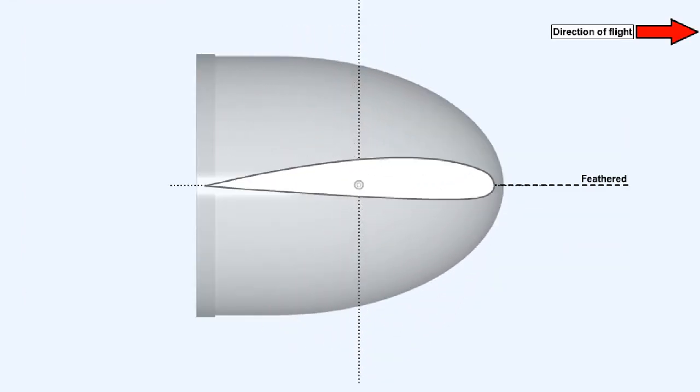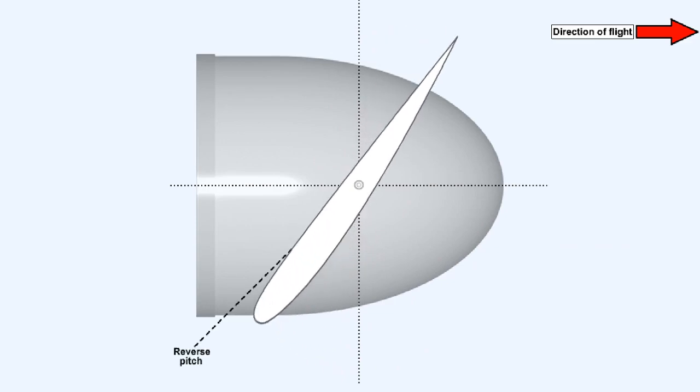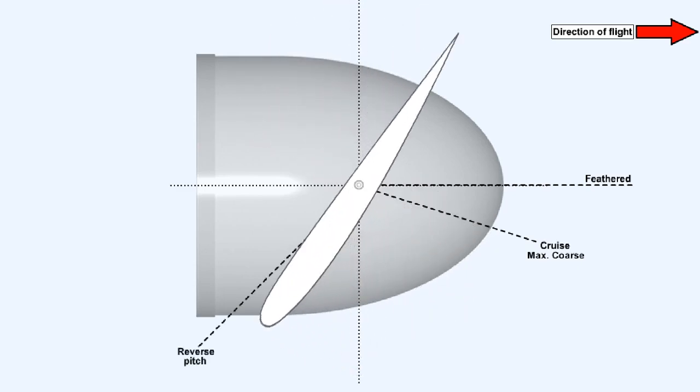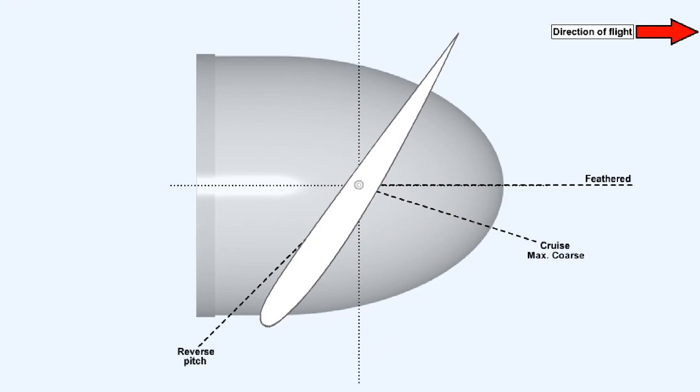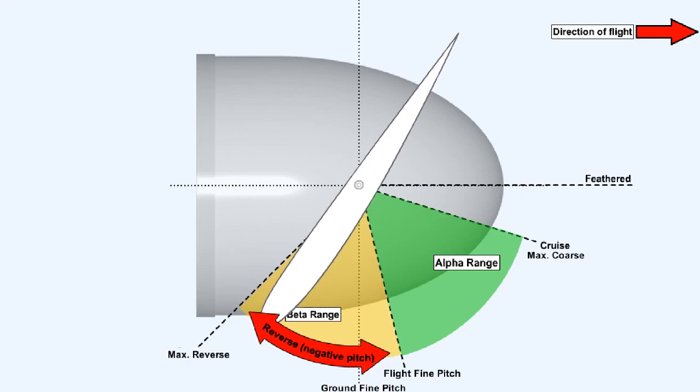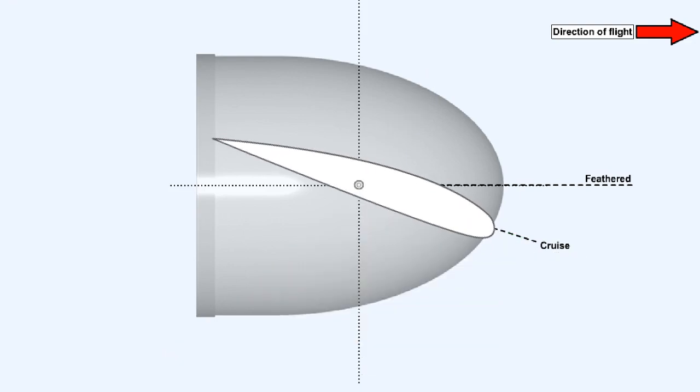Variable-pitch propellers may also have a reverse-pitch and or feathering function, the advantages of which will be discussed later in this lesson. This animation shows that under normal propeller control conditions, it's possible to provide a range of propeller pitch angles ranging from max coarse cruise all the way through to reverse pitch. The alpha or constant speed range is used for normal flight. It includes all pitch angles from flight fine through to max coarse. While the beta or ground range includes pitch angles between flight fine and maximum reverse.